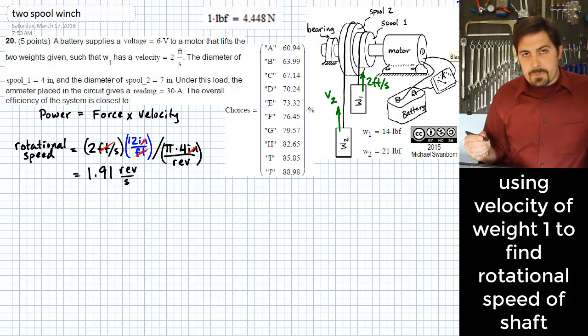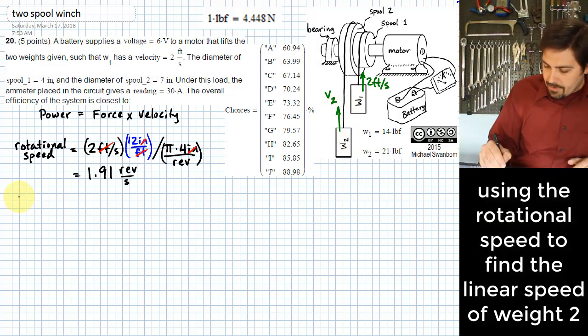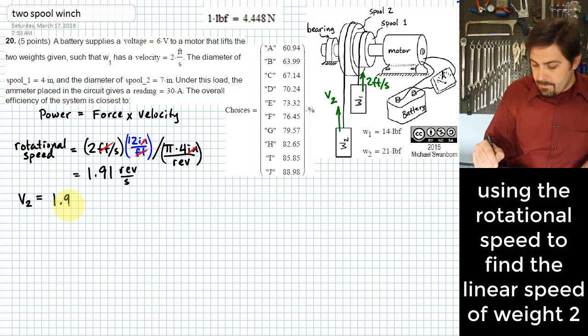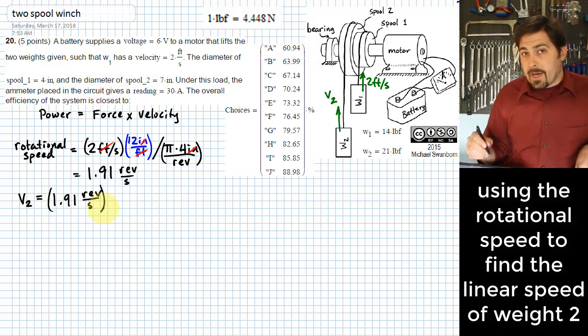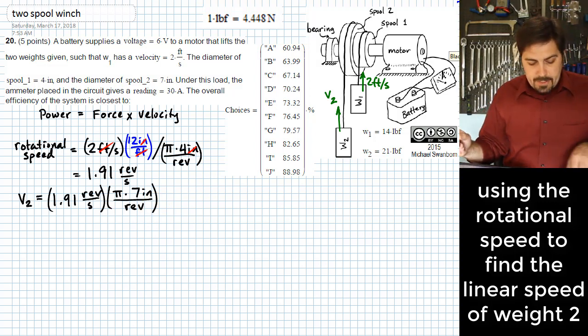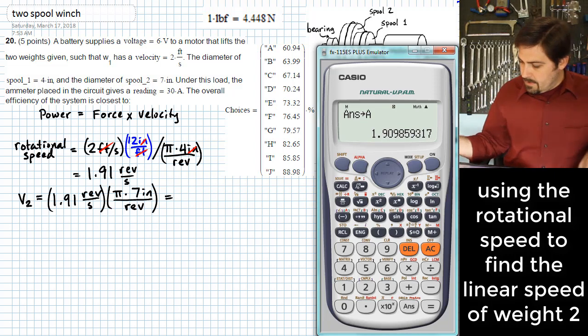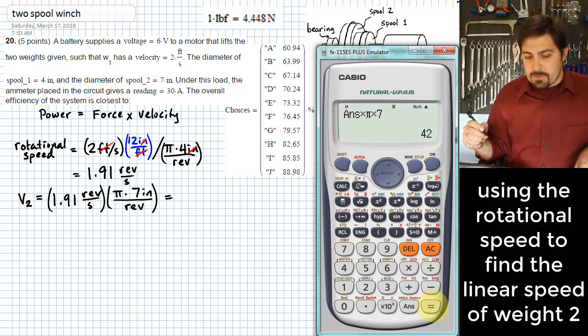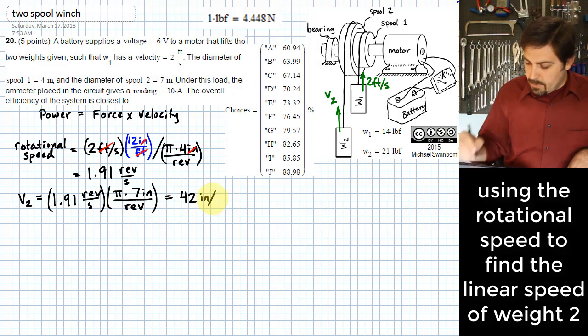So that's the rotational speed at the first part of this problem. Once I have the rotational speed, what I need to do is figure out the linear speed of the second weight. V2 is going to be equal to the rotational speed I just found of 1.91 revolutions per second, multiplied by how far we go in one revolution, which is pi times the diameter. The diameter of that other part is 7 inches. So we end up with that previous answer times pi times 7, which gives me 42 inches per second.